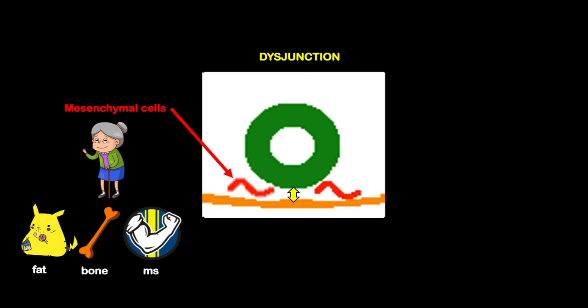So in normal development, the cord is covered or protected by bone, and this bone is separated from the skin by fat and muscle. This is all thanks to the development of structures derived from the grandma mesenchyme.